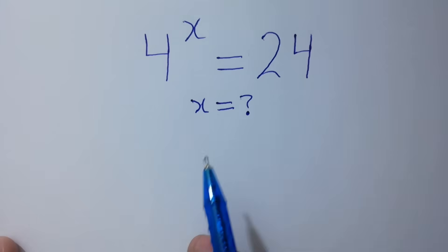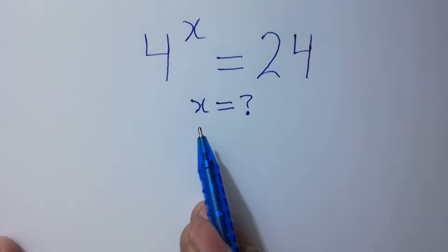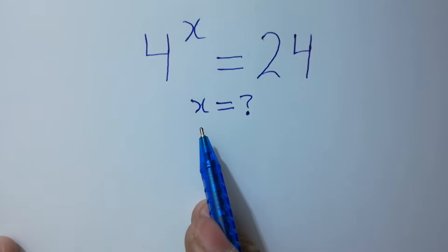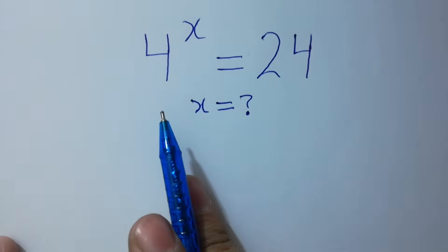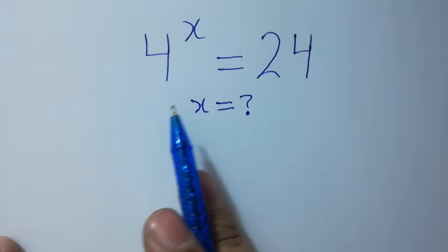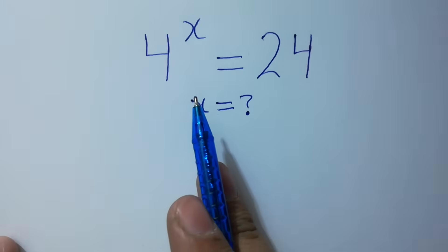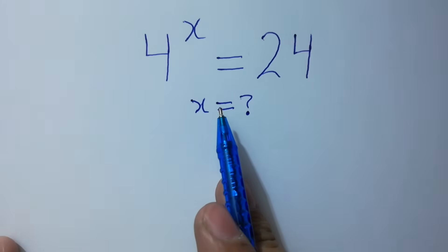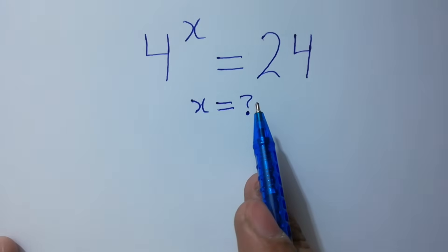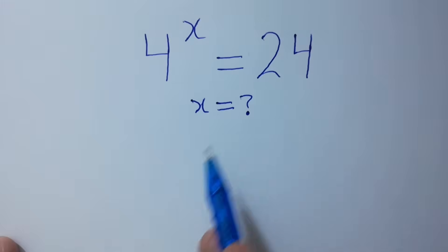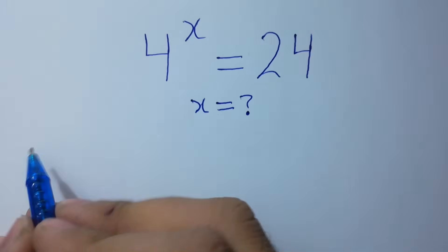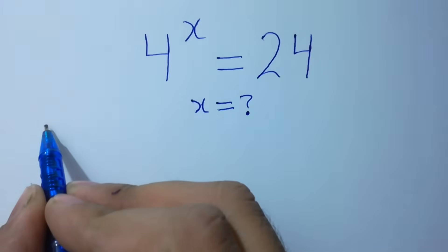Hello friends. Find the value of x if 4 to the power x equals 24. Let's solve it.